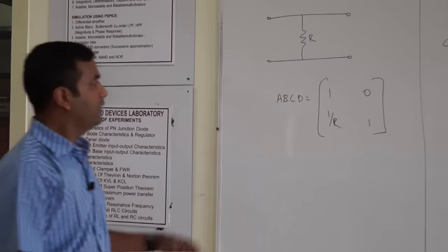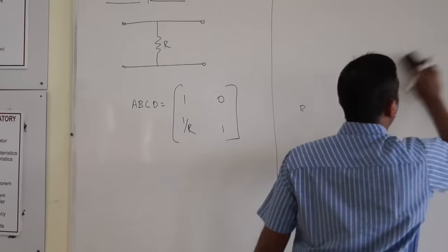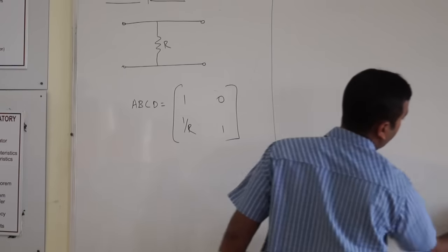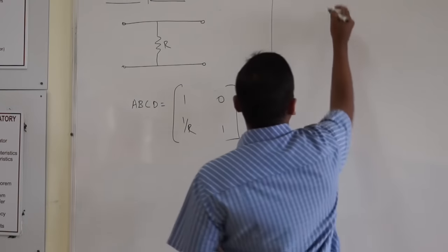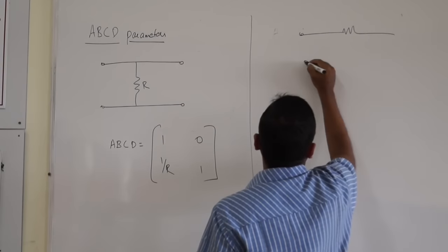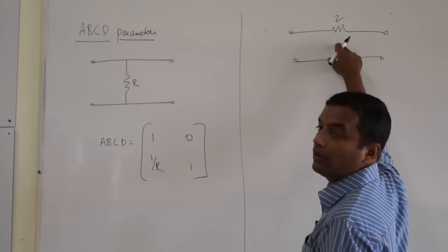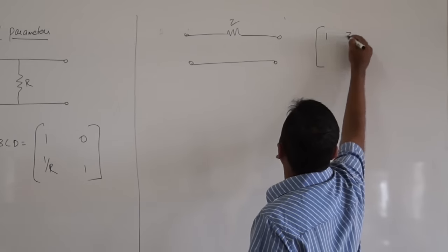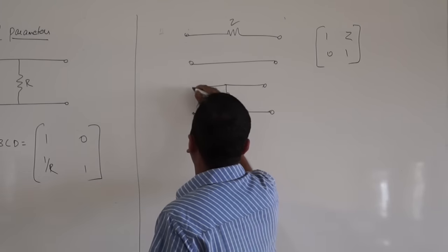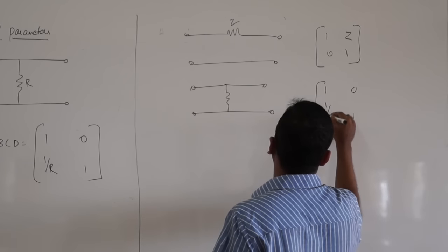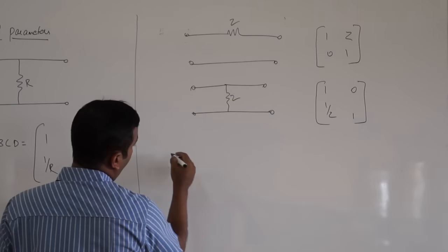The most interesting fact is — suppose I have a network with a series impedance Z. If I ask you to compute the ABCD parameter of this series element, it is nothing but: 1, Z, 0, 1. And suppose if I have a shunt element with impedance Z and I ask you to compute its ABCD parameter, it is nothing but: 1, 0, 1 over Z, 1.